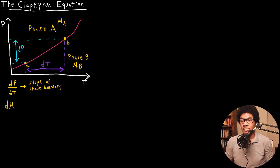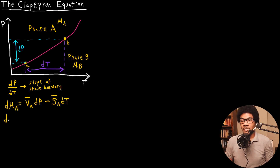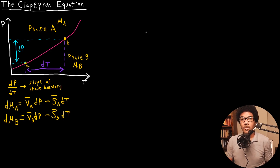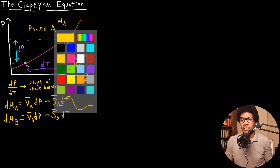Phase B would have μ_B, and phase A would have μ_A. We have a general differential that defines any infinitesimal change in the chemical potential. So for dμ_A, that would be equal to the molar volume of A times dp, minus the molar entropy of A times dT. Similarly, we can express an equation for phase B: molar volume of B times dp, minus the molar entropy of B times dT. Both of these differentials involve dp and dT, so we have most of the ingredients needed to derive a general relationship.